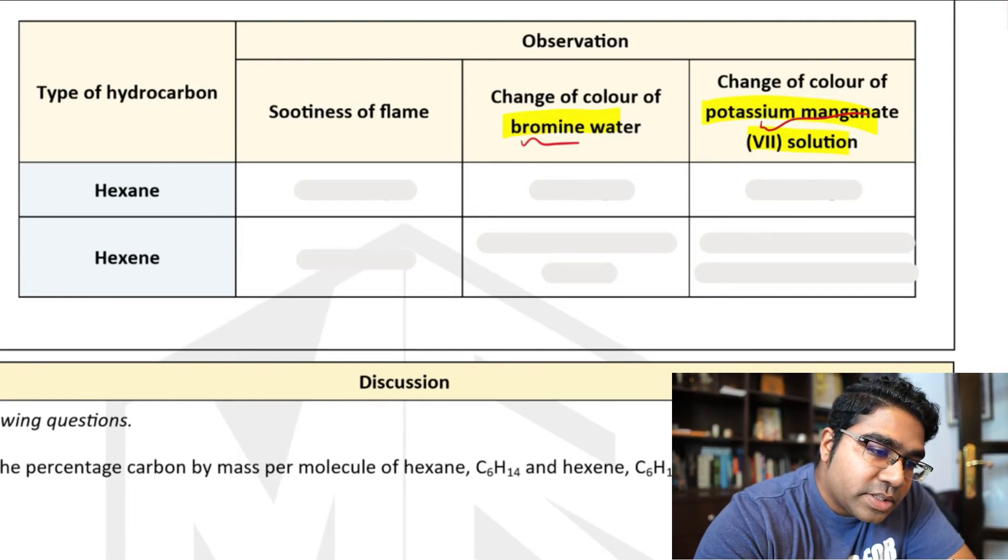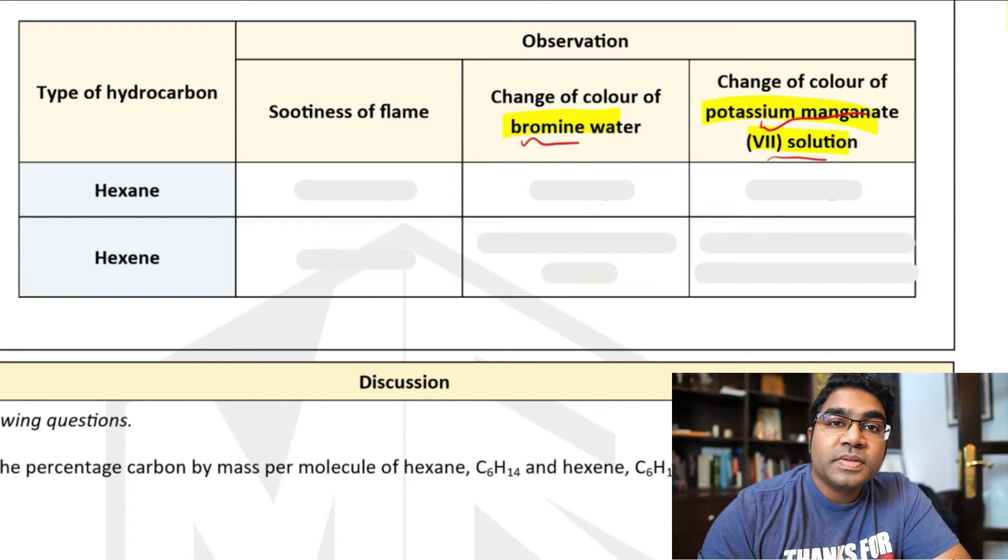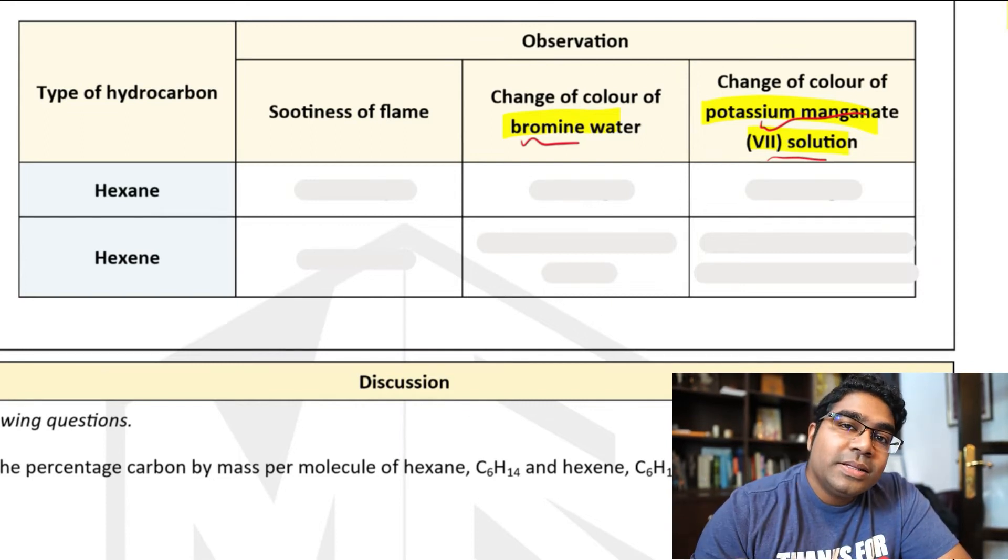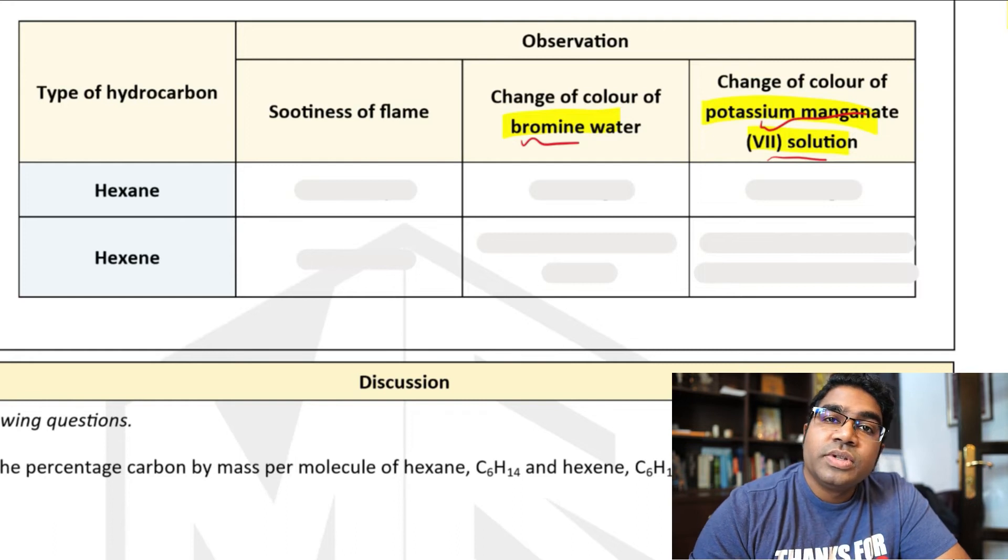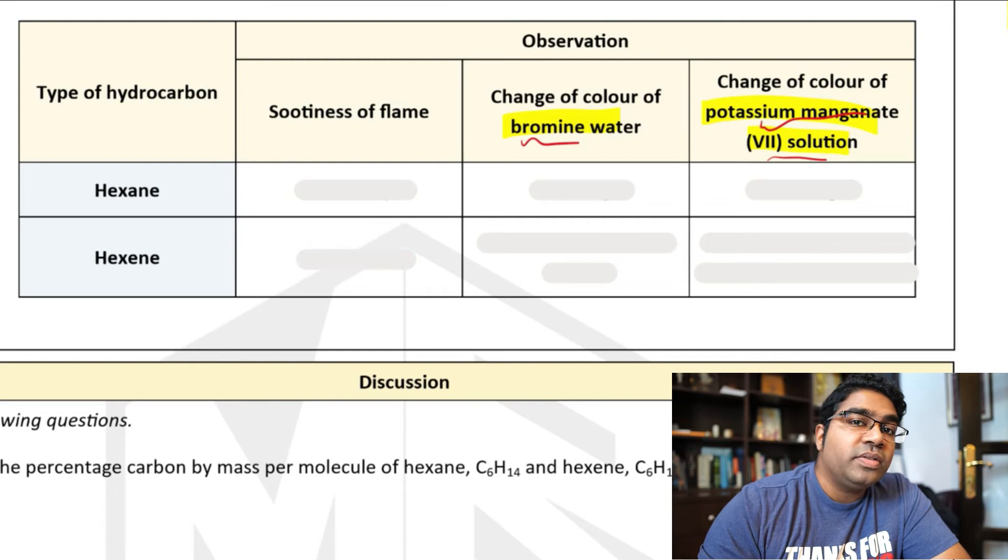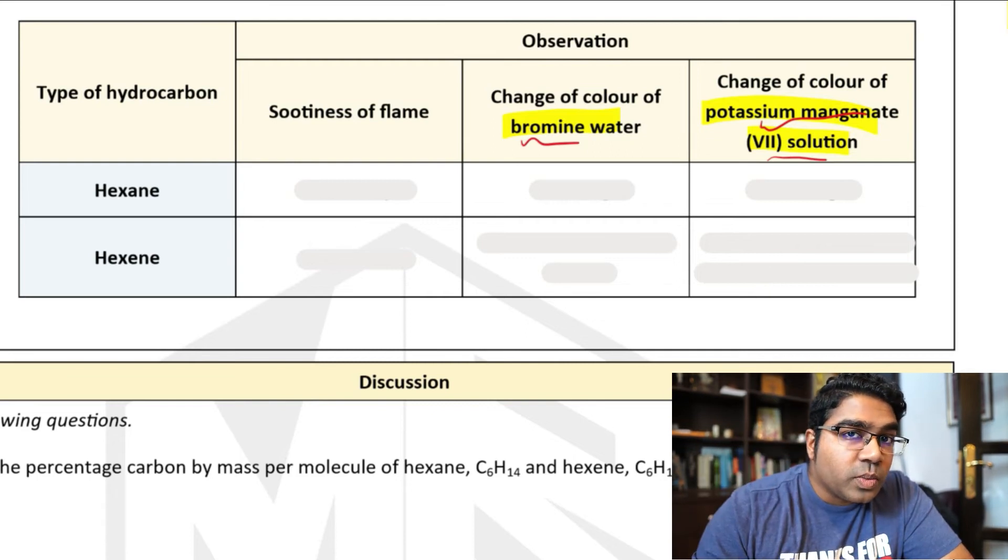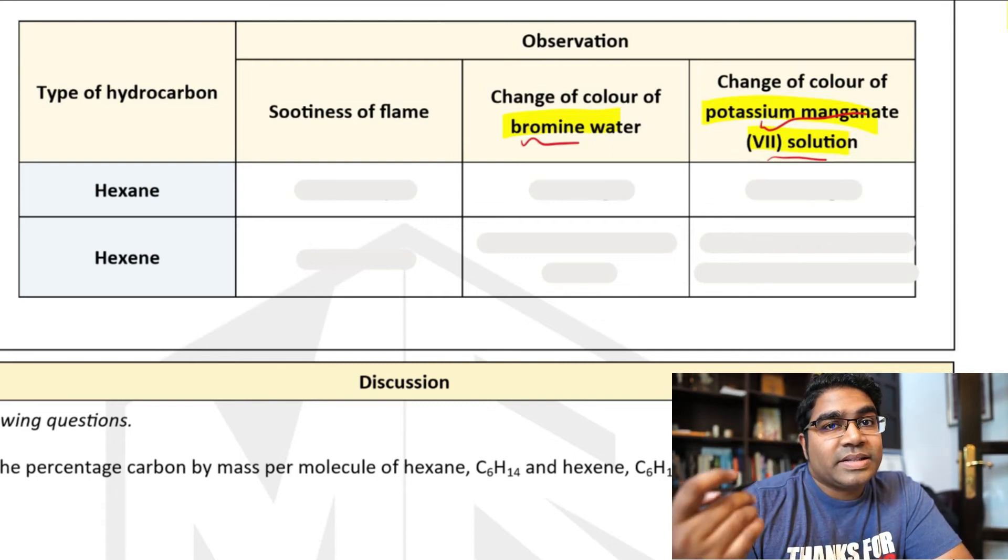And then for potassium manganate-7 solution, same story. Because of the C-C double bond, alkenes are able to undergo oxidation using potassium manganate-7 solution. It is also a type of addition reaction. Whereas alkanes do not react with potassium manganate-7 solution.